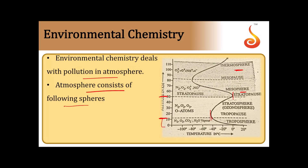The third sphere is the mesosphere, ranging from 50 kilometers to 85 kilometers. The mesosphere consists of nitrogen, oxygen, O2+ and NO+ ions. Temperature ranges from minus 2 degrees Celsius to minus 92 degrees Celsius.